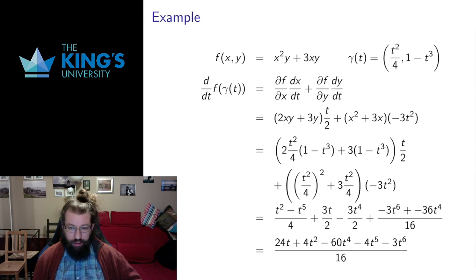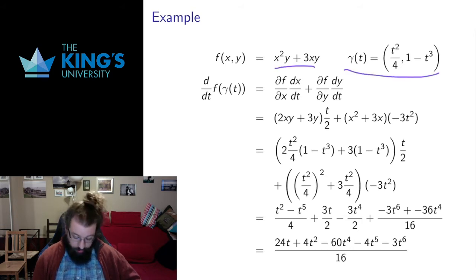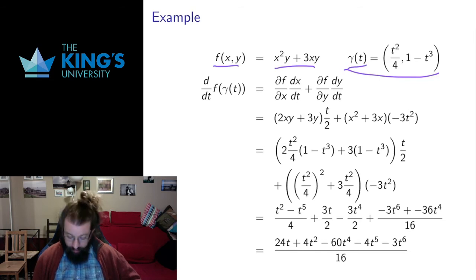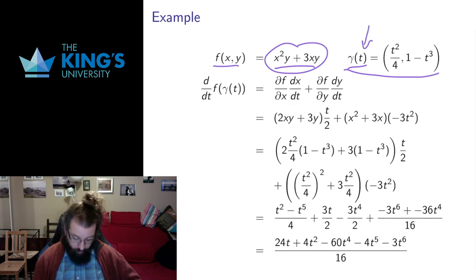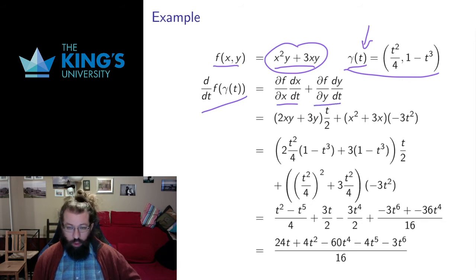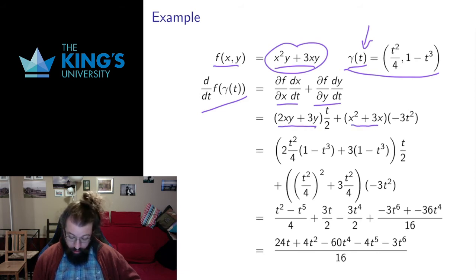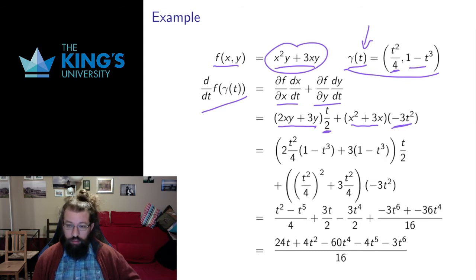Let me do an example to show what that evaluation step looks like. Here's a scalar field in R2 and a parametric curve in R2. I compose the scalar field along the parametric curve — I'm asking how does this scalar field change as I move along this path. Taking the derivative gives x and y pieces, one for each variable: I take the partial of f with respect to x and the partial of f with respect to y, multiplied by the derivatives of the first and second components of the parametric curve with respect to t.